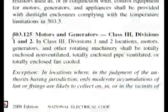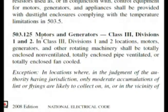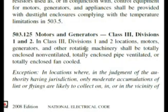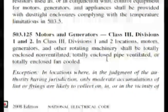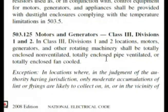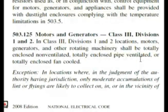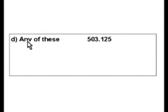Here we are at 503.125, motors and generators, class 2, divisions 1 and 2. It's telling us that they should be totally enclosed, non-ventilated — choice A; totally enclosed, pipe-ventilated — choice B; or totally enclosed, fan-cooled — choice C. So any of those choices can work. The answer for our test is any of those choices, which is D.